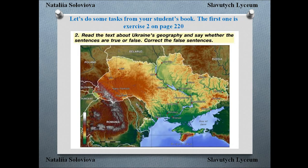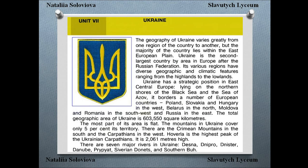So, as I told you, we'll start our work with exercise number 2 on page 220. The task is: read the text about Ukraine's geography and say whether the sentences are true or false. Correct the false sentences. We'll decide if the sentences are true or false. So it's time to read the text. Are you ready? Listen to me, please, and later read this text by yourselves.